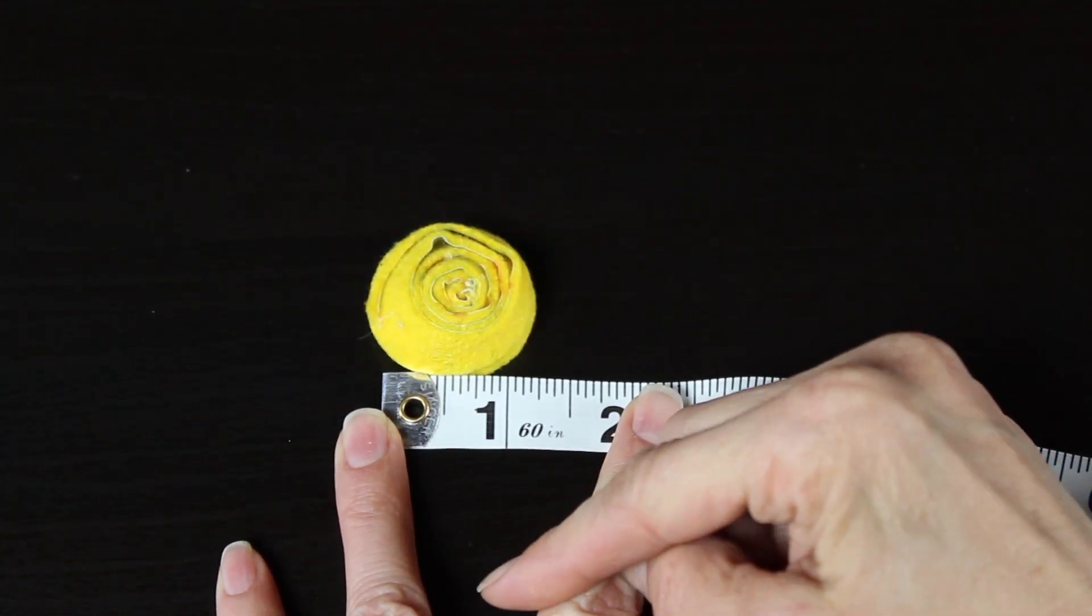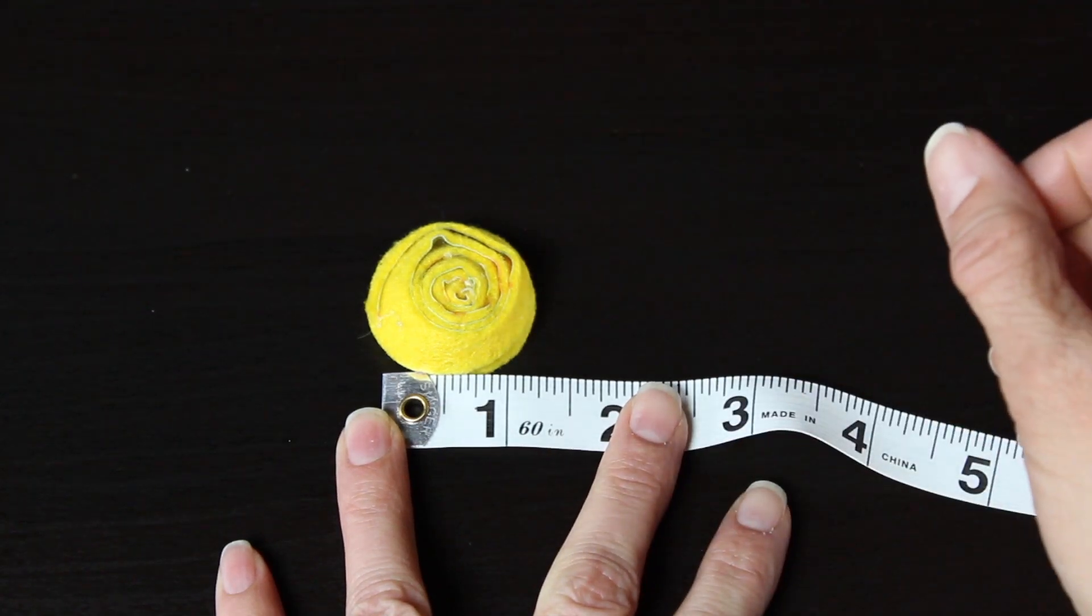And what that will do is we'll end up with a one inch rosette. You can actually use any type of or any size of flower you'd like for this but I really like the one inch rosette. It seemed to work really well for a baby headband.